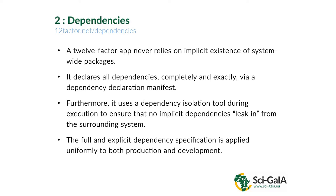A good 12-factor application explicitly states what dependencies it has. Most of you will be writing applications in Python, PHP, or Ruby on Rails — maybe a Microsoft-based stack like ASP.NET. All of these have their own package management systems. These dependencies should not implicitly rely on something available on the system, because you don't know where this application will be running. You should have some declarative way to tell the system which dependencies your application has. You should also use a dependency isolation tool so that you don't leak in system dependencies or accidentally use an insecure or untested version of a dependency.